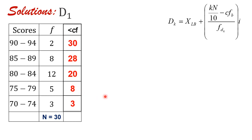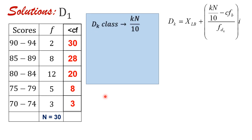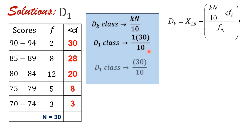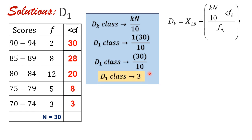Now let us proceed with identifying the D1 class. We're going to use our formula k times n divided by 10. Substituting k as 1 because we are looking for the first decile, and 30 refers to our n — the total number of frequency, which we get by adding all frequencies: 2 plus 8 plus 12 plus 5 plus 3, giving us 30. So 1 times 30 divided by 10 gives us 3, meaning D1 class is the 3rd term. Let's highlight where this belongs.